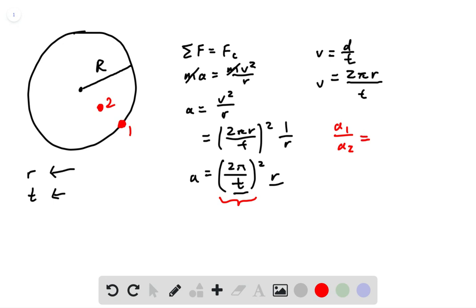So in the ratio, that part will cancel out, leaving us only r₁ over r₂. Since r₁ is at the edge and r₂ is halfway to the edge, r₁ over r₂ equals 2. So the ratio is 2 to 1.